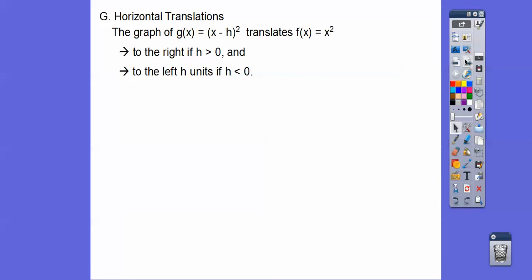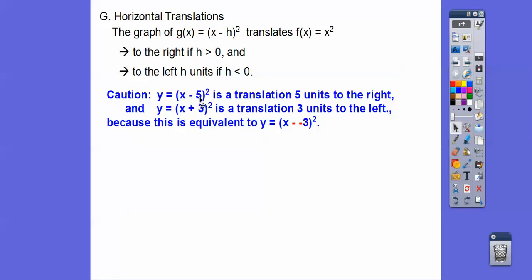Now we have horizontal translations. A horizontal translation occurs when there's a number inside the parentheses with the x being squared. We go to the right if h is positive and to the left if h is negative — just be careful: x − 5 shifts right 5, while x + 3 is the same as x − (−3), so h is negative 3, meaning it shifts left 3.